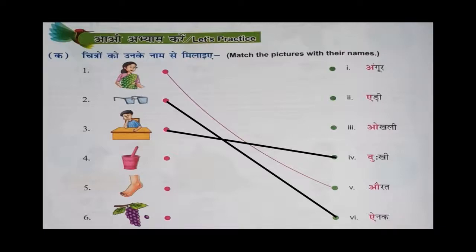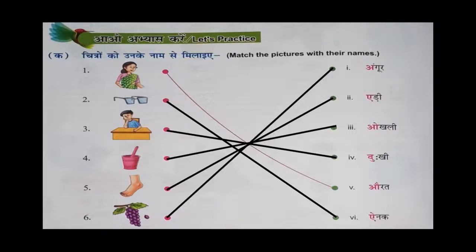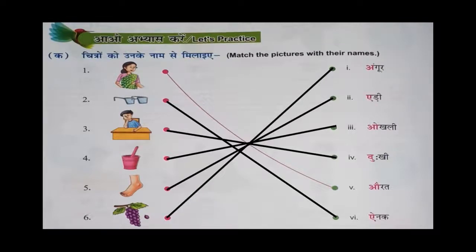So where is O? Yes. And the fifth picture is adi — A say adi. Where is A? Yes, very good. Now the last picture is anghoor — ang se anghoor. Very good. Now we will do the next exercise.